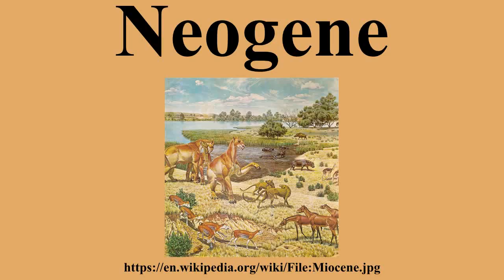The global climate became seasonal and continued its overall drying and cooling trend, which began in the beginning of the Paleogene. The ice caps on both poles began to grow and thicken, and by the end of the period the first of a series of glaciations of the current Ice Age began.